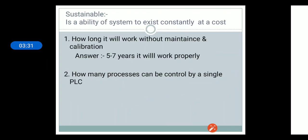The second point is sustainability. Sustainability means the ability of a system to exist constantly. For framing a question on sustainability, we can frame it like this: how long will it work without maintenance and calibration? PLC can work properly for 5 to 7 years without maintenance and calibration, so it is the most sustainable controller used in industry today.